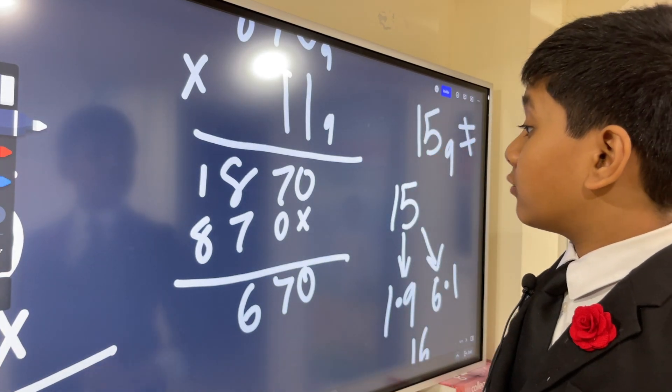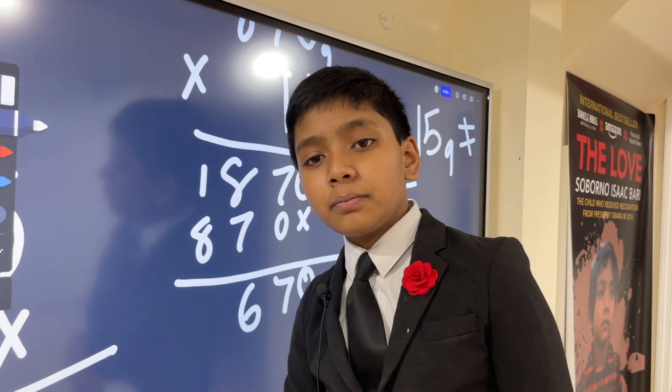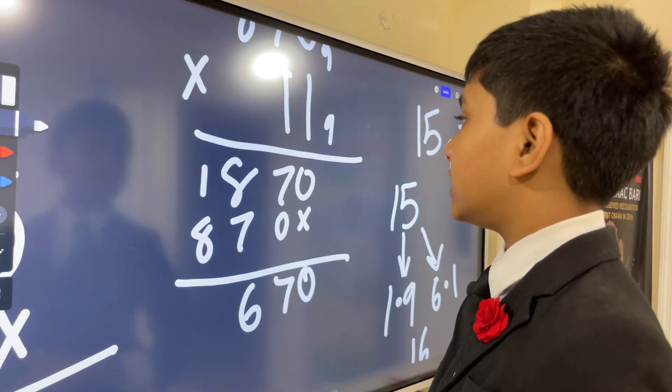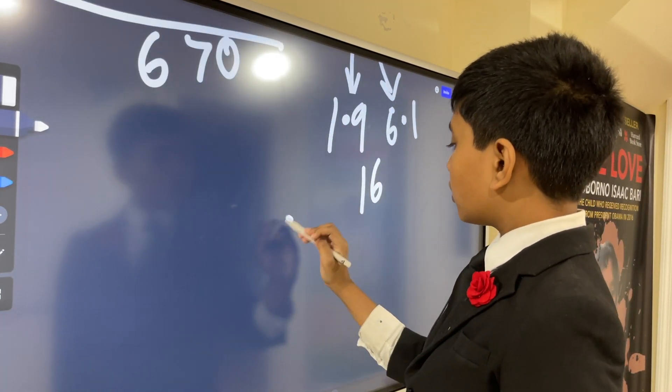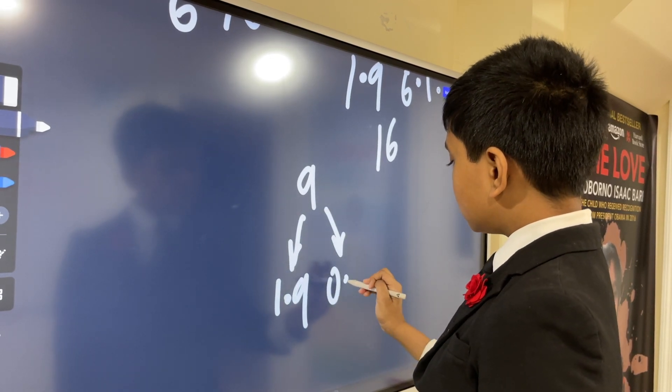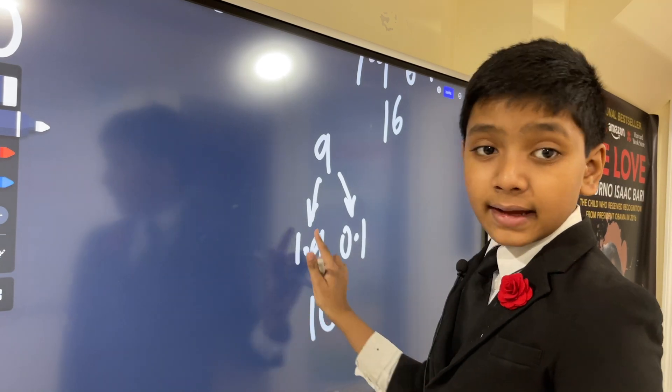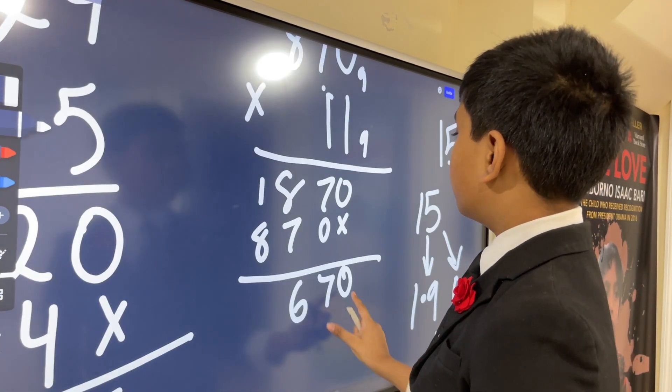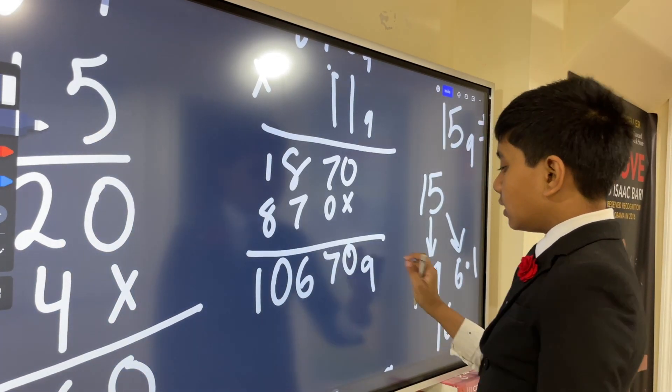Now we have 1 plus 8, but 1 plus 8 isn't allowed either because that forms 9, and 9 isn't a digit in base 9. But 9 can be converted into 1 nine and 0 ones, making it 10 in base 9. That gives us our answer.